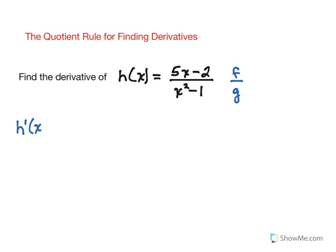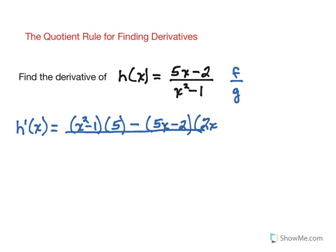So in order to use the quotient rule, we start in the denominator and keep that. Then we multiply by the derivative of the numerator, and it's always minus. Keep the numerator and multiply by the derivative of the denominator, and all you're doing here in this case is to use the power rule. Then we have it over the denominator squared.